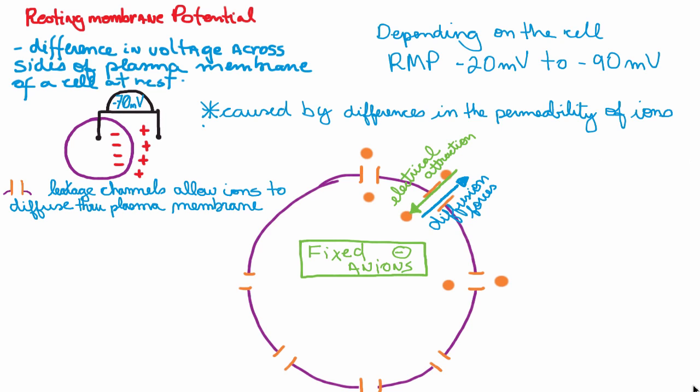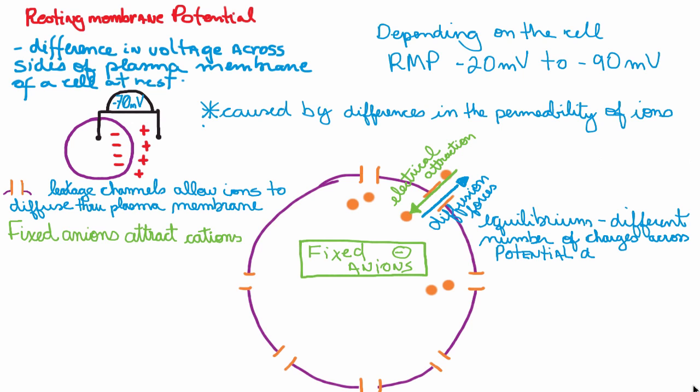What are those fixed-in ions? They are large proteins that are trapped inside the cell that cannot diffuse out. Just like a magnet, these fixed-in ions will exert an electrical attraction over the cations and actually attract some of those potassium charges inside the cell. One by one, these potassium ions move inside the cell, being electrically attracted by the fixed-in ions. The result is that equilibrium is reached, but with a different number of charges across the membrane - a potential difference between the inside and outside of the cell.